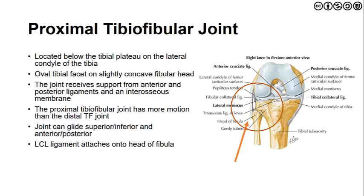The third joint we have to talk about is the proximal tibiofibular joint. It is located below the tibial plateau on the lateral condyle of the tibia — an oval tibial facet on a slightly concave fibular head. The joint receives support from anterior and posterior ligaments as well as an interosseous membrane. The proximal tibiofibular joint has more motion than the distal tibiofibular joint. It can glide both superior-inferior and anterior-posterior, but follows more of a rectilinear path — more of an anterolateral and posterior-medial direction. The lateral collateral ligament does attach onto the head of the fibula.